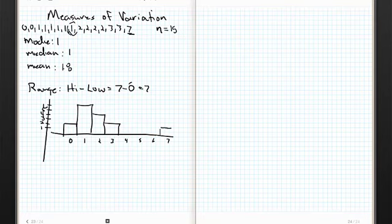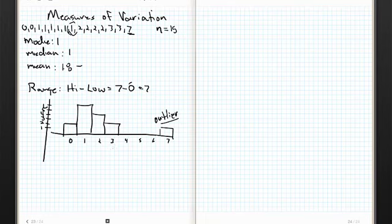Hopefully at this point you're looking at that going: that's starting to smell like an outlier. Is that an outlier? Well, based on what it did to our mean, you'd probably be correct. We'll come up with a way to figure that out as we get through these measures of variation here in just a second.